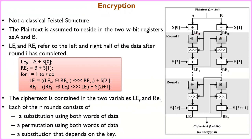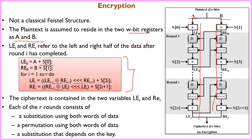In the encryption algorithm, the plaintext is assumed to reside in two W-bit registers A and B. In each round, the following operations are executed: addition, XOR, and then circular left or right shift. One round consists of: XOR, circular left shift, and addition process. You will get the ciphertext in the variables L and R after the rounds complete.